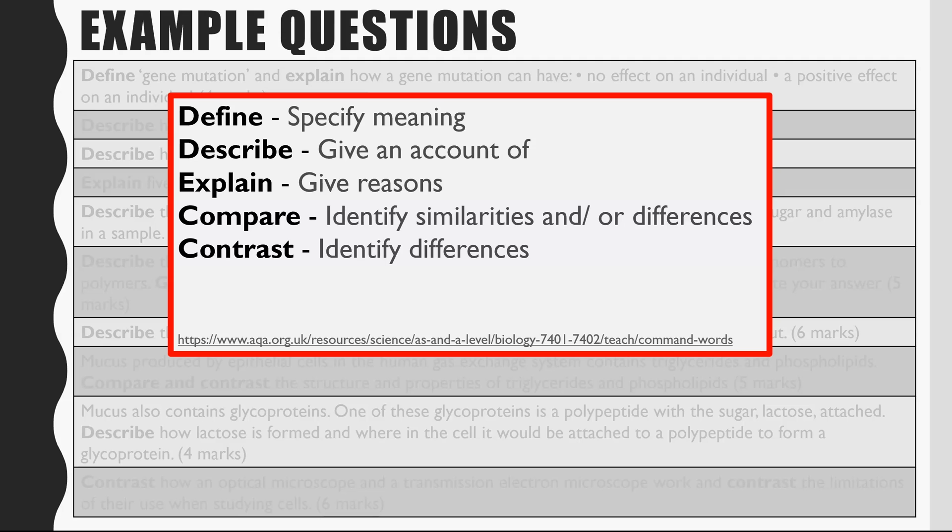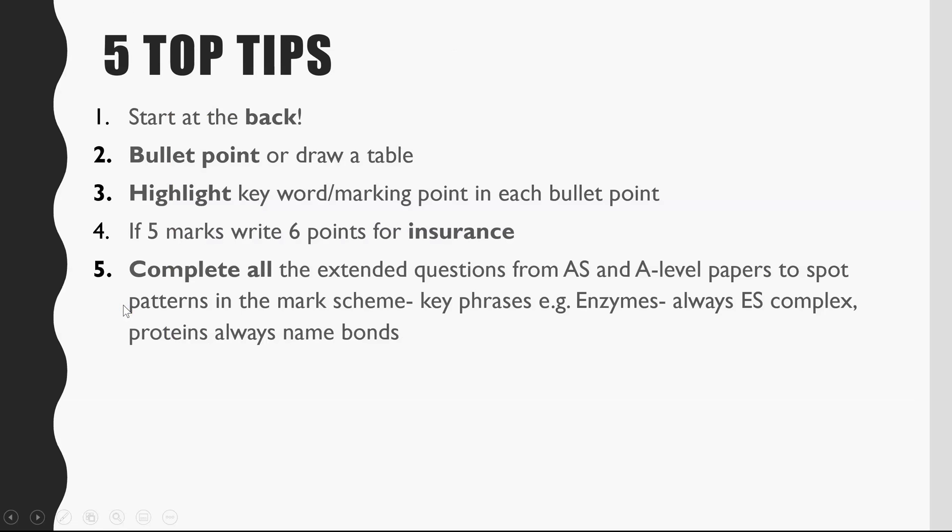The extended response questions at the back of the test are really just assessing your knowledge. So my first top tip out of 5 is: for paper 1, start at the back. Go straight to those 15 marks of extended response questions. Assuming you have revised a lot, you should have the knowledge to get nearly full marks or full marks on those questions. Students often find there's quite a tough time demand with paper 1, spending extra time on other questions, reading information, analysing graphs, applying their knowledge. If you go straight to the back, you don't run the risk of running out of time and missing 15 marks that you could have quite reasonably achieved.